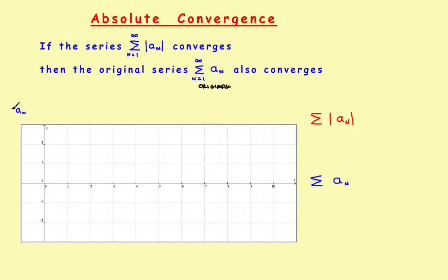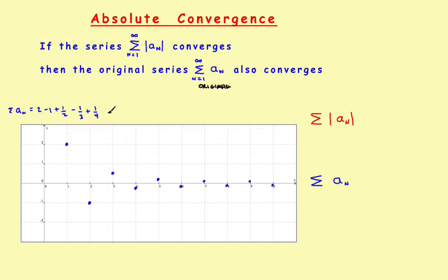So a sub n — I want to find the summation of this thing. It has some positive and some negative terms. The first term is 2, the second term is minus 1, the third term is plus 1/2, the next term is minus 1/3, the next term is plus 1/4, and so on. This is the original series — it's an alternating series.